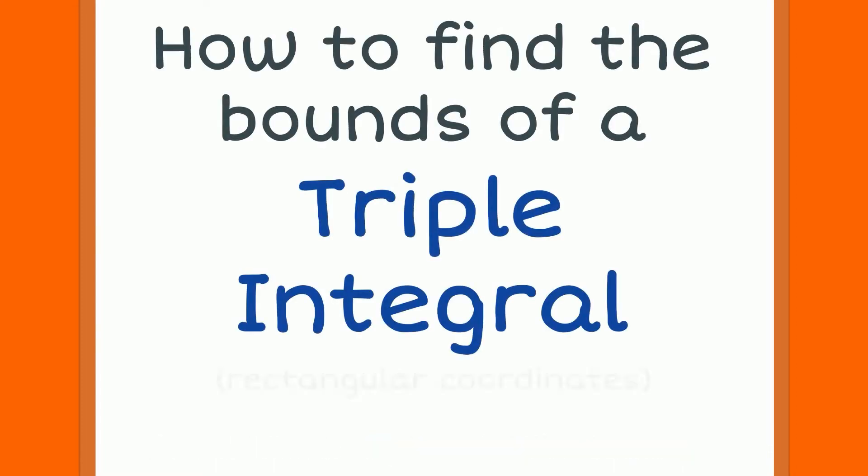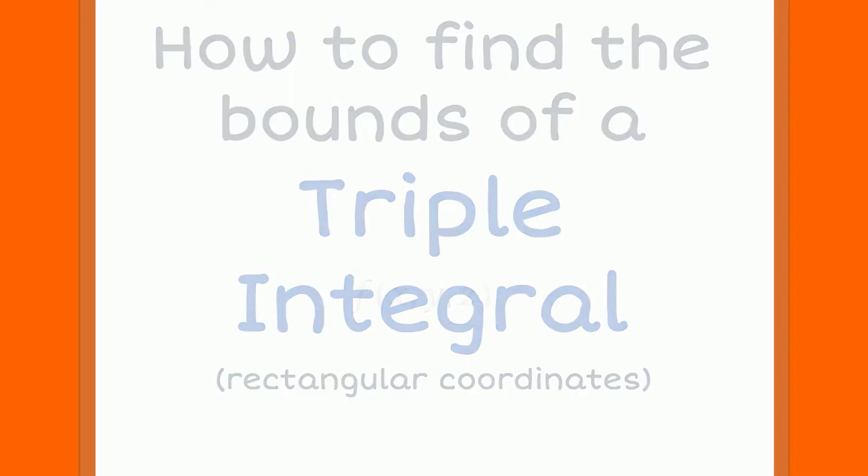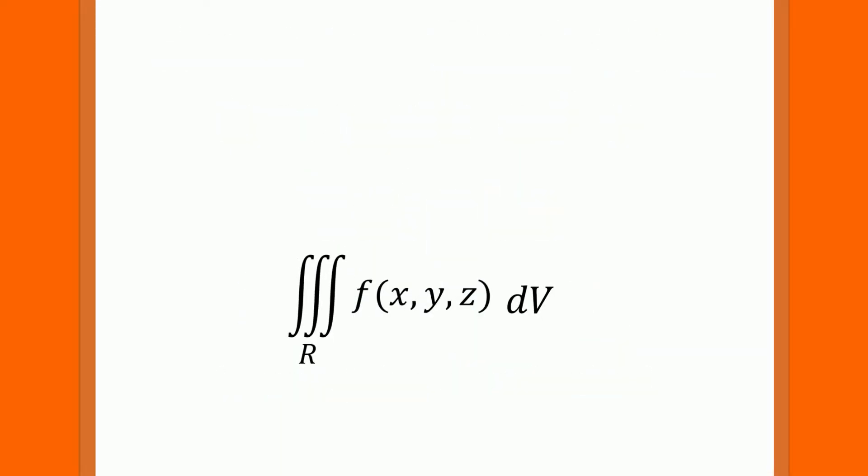How to find the bounds of a triple integral. When a triple integral is applied to a function, it gives us a hypervolume. This hypervolume comes from the space that is bounded by a given three-dimensional region and the surface of the function.